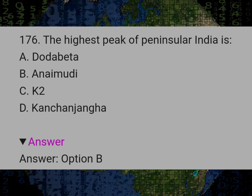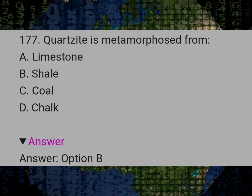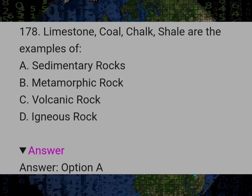The highest peak of peninsular India is? Answer B: Anamudi. Cozite is metamorphosed from? Answer B: Shale. Limestone, coal, chalk, shale are the examples of? Answer A: Sedimentary rocks.